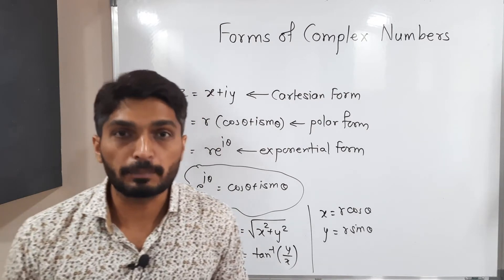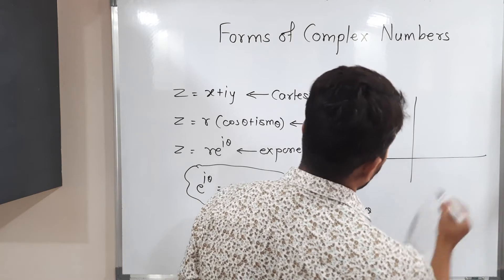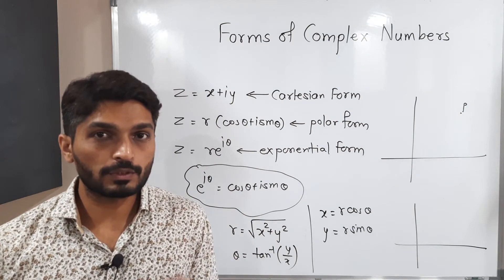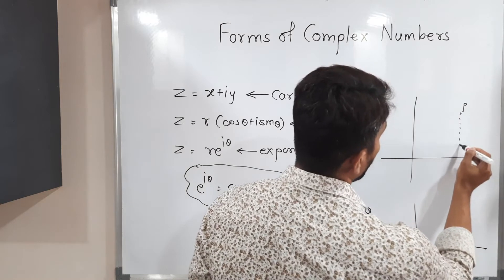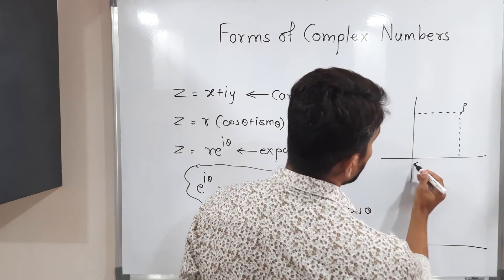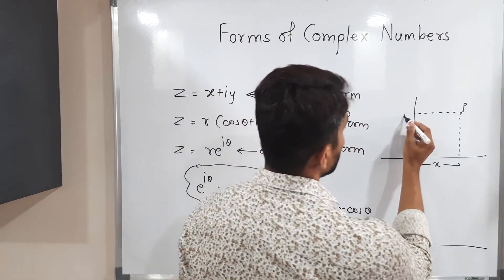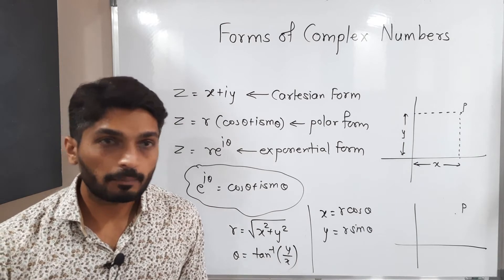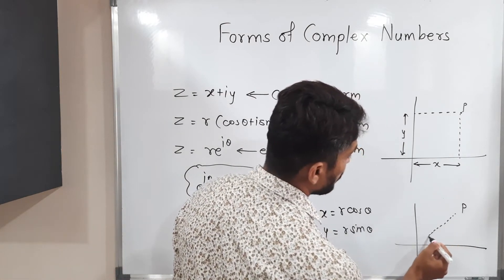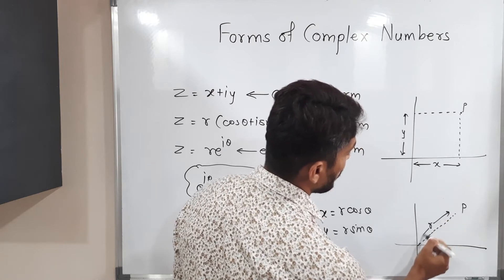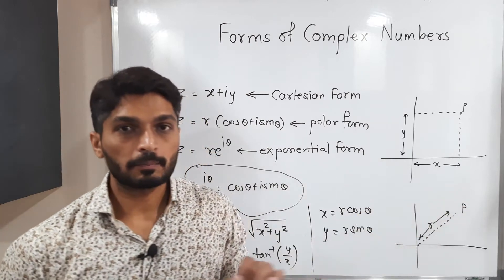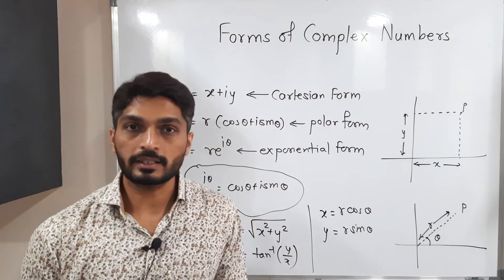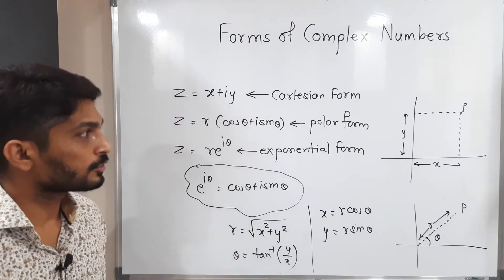Let us see the geometrical meaning. When we have any point P expressed in Cartesian form, if you take the projection on the X axis, that distance is X, and the projection on the Y axis gives Y. In polar form, R is the distance of the point from the origin — the length of the line segment — and theta is the angle it makes with the positive X axis. This is the geometrical interpretation of R, theta and X, Y.